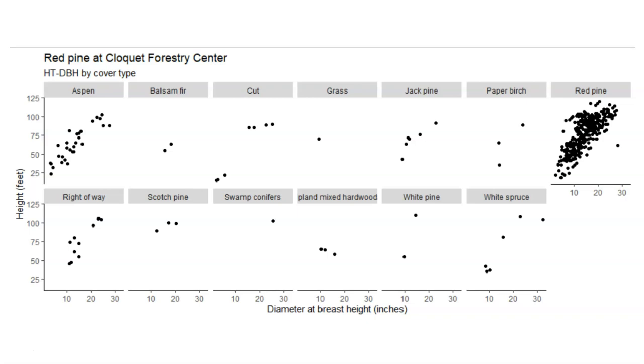This is generally what species is dominant in the forest that these trees reside in. As you might expect, this is the same scatter plot you saw in the previous graph, but it's faceted out by the different cover types. There are several of them at the Cloquet Forestry Center.